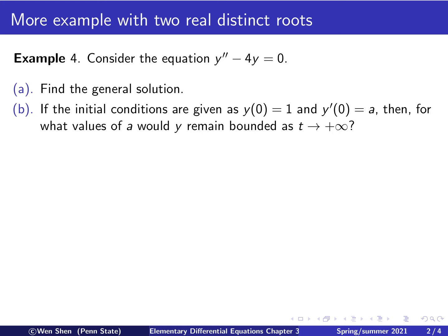So the first example is this one. We have this equation, y double prime minus 4y equals 0. Two parts of the work we have to do. Part A, find the general solution. Part B, we will now give the initial condition, y(0) = 1, y'(0) = a. And then, the question asks that, for what values of a would the solution y remain bounded as time goes to infinity?